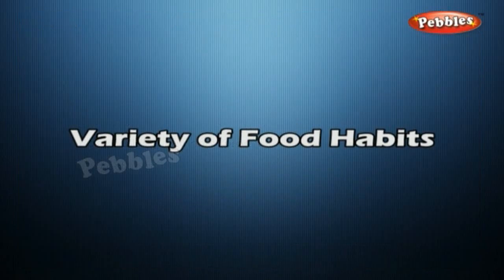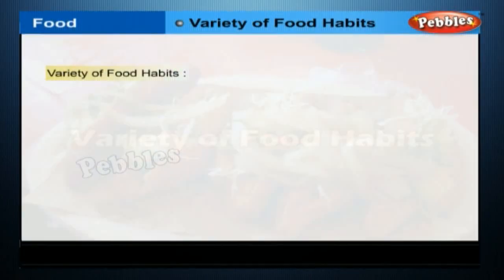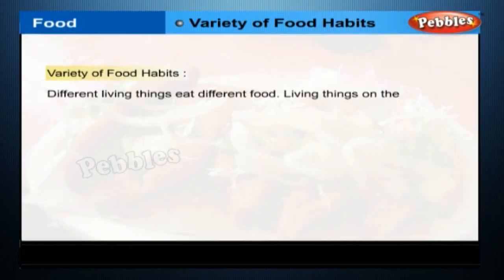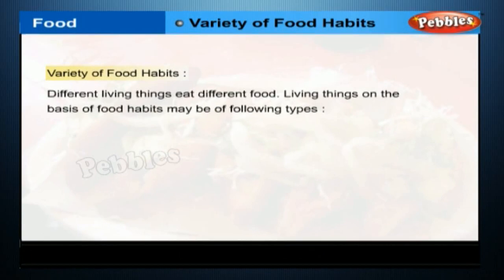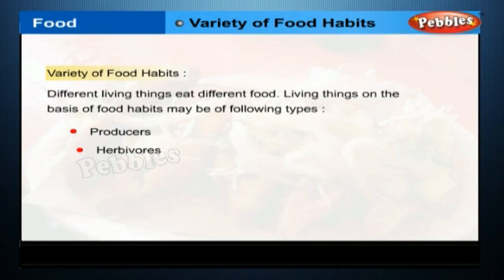Variety of food habits. Different living things eat different food. Living things, on the basis of food habits, may be of the following types: producers, herbivores, carnivores, and omnivores.